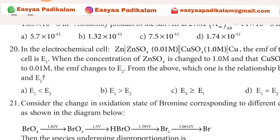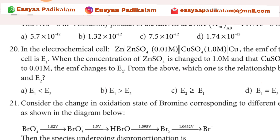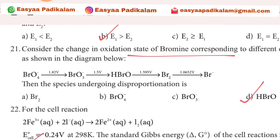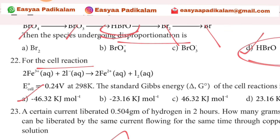Twentieth question: electrochemical cell, 2 options E1 and E2. 1 is to 1. 2 is to 1. Twenty-first question: 2 is to 1. Gibbs energy. Answer is 2 is to 1.